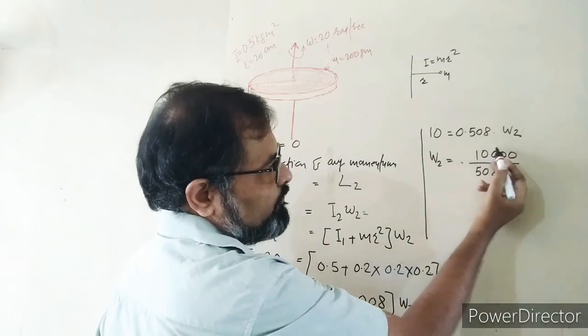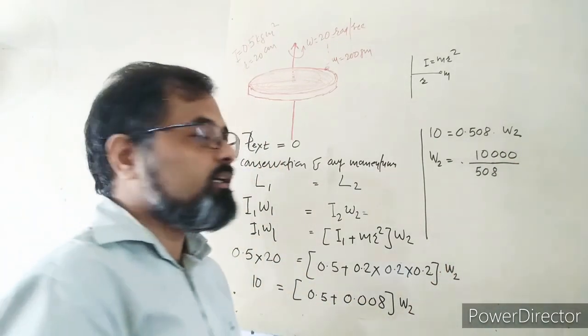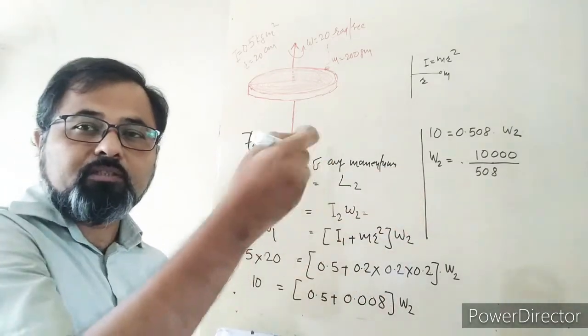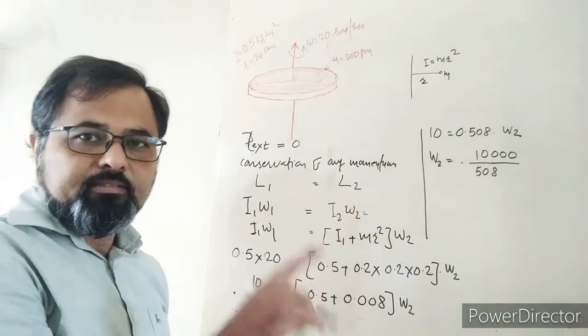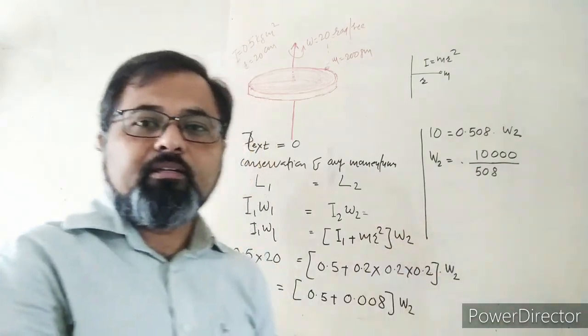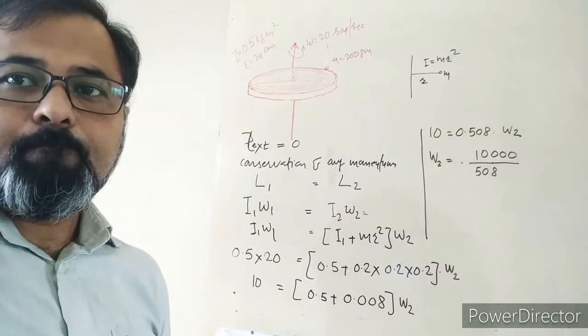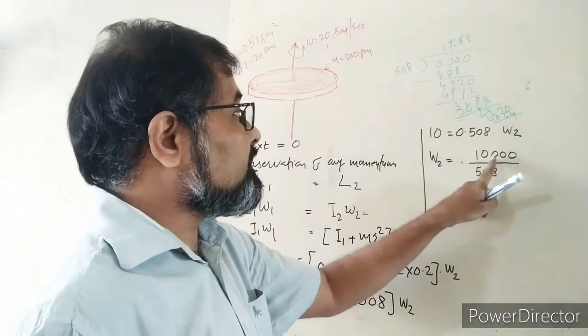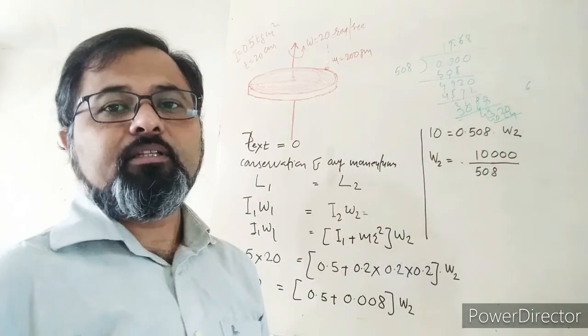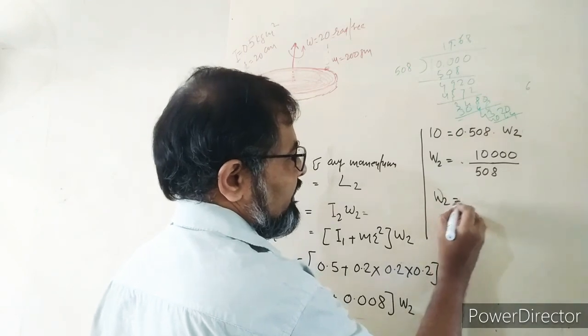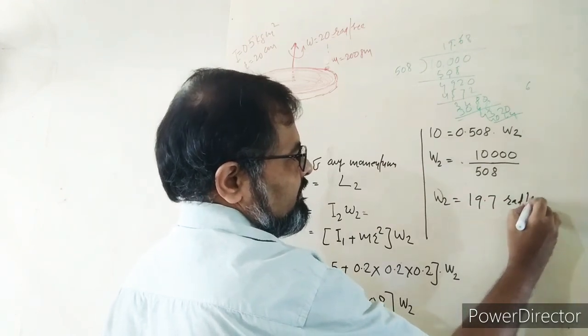This gives us 10,000 divided by 508, which equals 19.6. So the new angular velocity is 19.6 or approximately 19.7 radian per second.